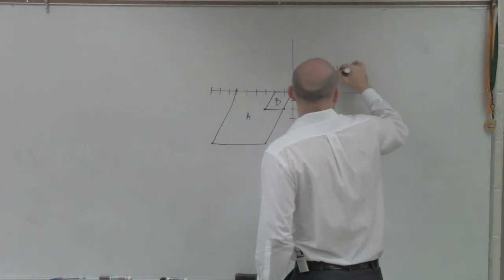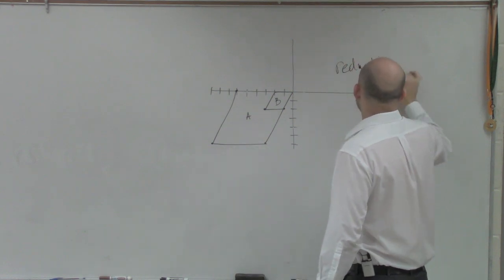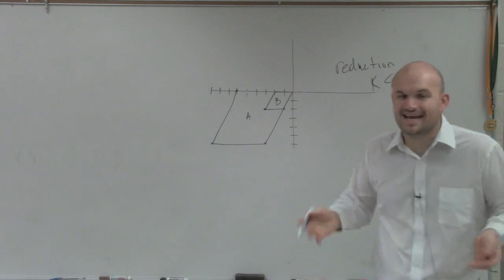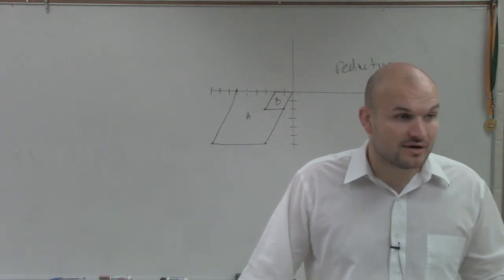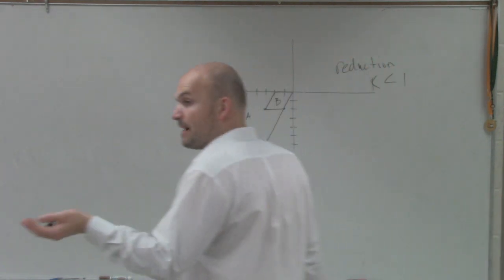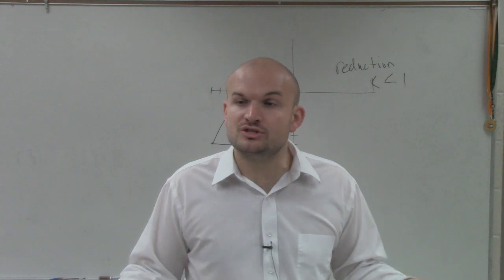So remember, if it's a reduction, then our k has to be less than 1, right? k is our scale factor. How much are we reducing it? Are we reducing it by 1 half? Are we reducing it by 1 third? By 1 fourth? By 1 hundredth? What is the factor that we reduce each side?